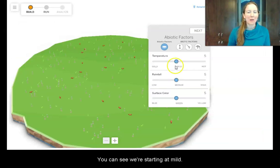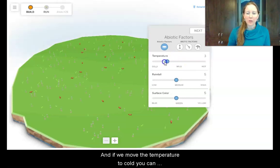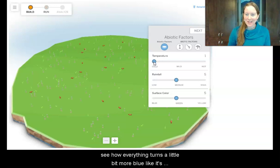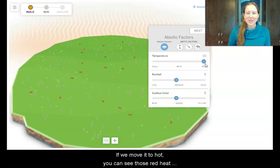So you can see we're starting at mild, and if we move the temperature to cold, you can see how everything turns a little bit more blue, like it's cold and icy and snowy. If we move it to hot, you can see those red heat waves showing that it's roasting hot.